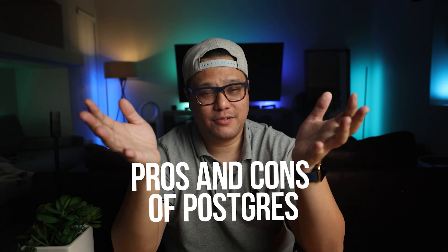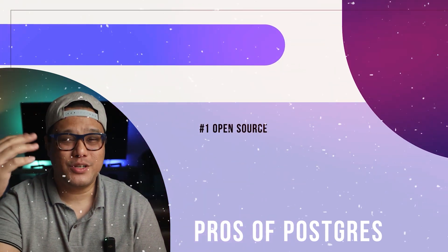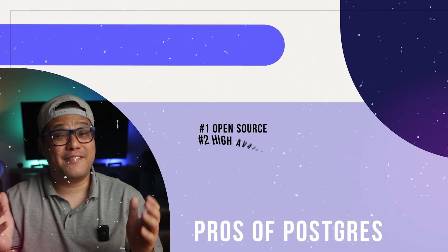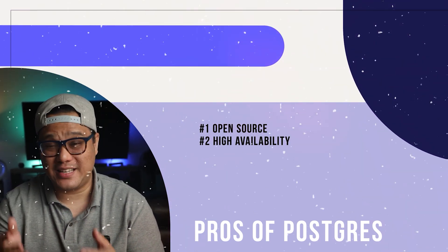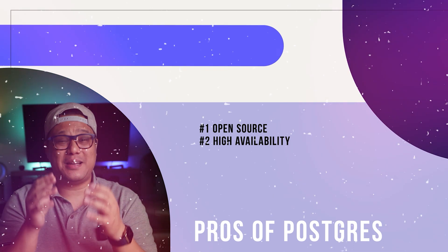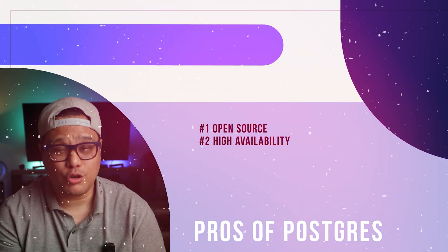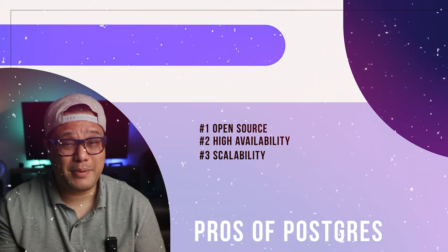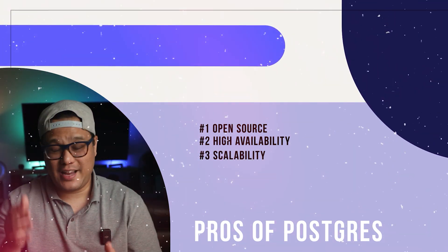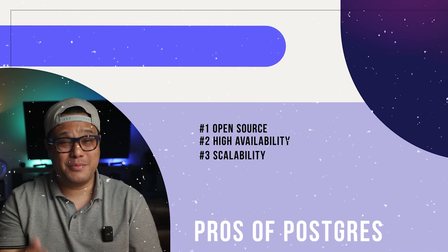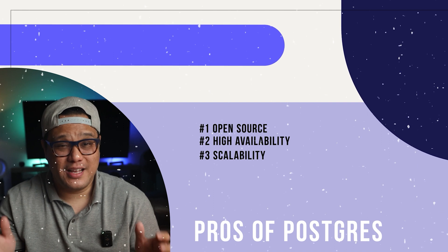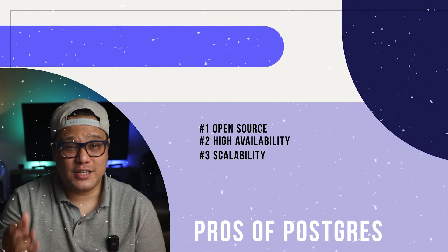What are the pros of Postgres? Number one: open source — there are no license fees, which makes it considerably less expensive, especially for startups. High availability — the high availability of Postgres clusters is maintained by guaranteeing that a backup server will assume control if the primary server fails. And scalability — Postgres supports vertical scalability and can run on bigger and faster machines to increase performance. It is also compatible with many languages for triggers and stored procedures.